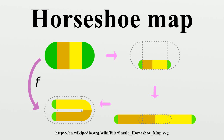Next, the rectangle is stretched horizontally by a factor of one, and the caps remain unchanged. Finally, the resulting strip is folded into a horseshoe shape and placed back into S. The interesting part of the dynamics is the image of the square into itself. Once that part is defined, the map can be extended to a diffeomorphism by defining its action on the caps.